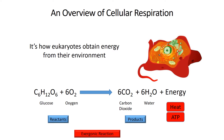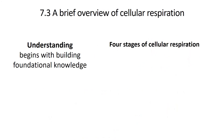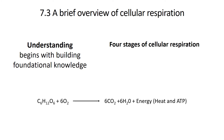Understanding begins with building foundational knowledge. To start, memorize the equation to cellular respiration. Cellular respiration is going to take place in four different stages, so that reaction isn't going to occur all at once. It's going to begin with glycolysis, second pyruvate oxidation, then the Krebs cycle, then oxidative phosphorylation is the fourth and final stage.